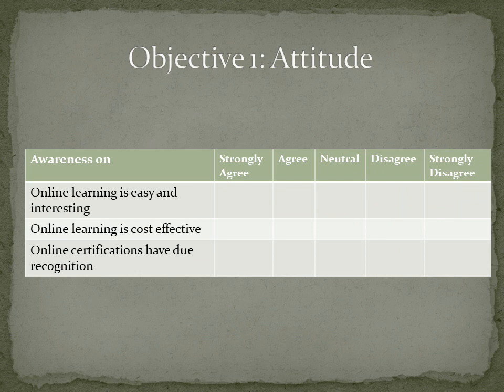For measuring attitude, attitude is again a constructive or abstract variable that you cannot directly measure. So you make some statements that can lead to attitude — for example: 'online learning is easy and interesting', where respondents can mark whether they strongly agree or strongly disagree. Other statements include 'online learning is cost effective' and 'online certification has due recognition.'